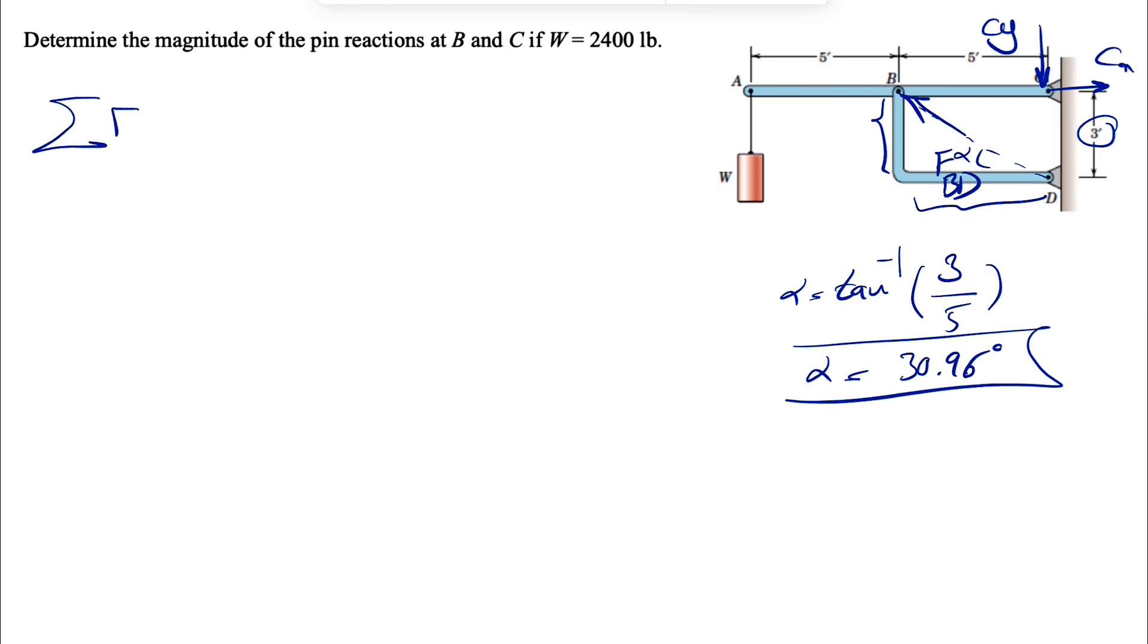All right, now we can go with our equilibrium equation. Sum of all forces in X equals zero. Let's see what we have. We have CX and we have the X component of FBD, which is going to be negative. So minus FBD cosine of alpha, which was 30.96 degrees. And from this equation, we have two unknowns. We cannot find anything. So let's move on to the second one.